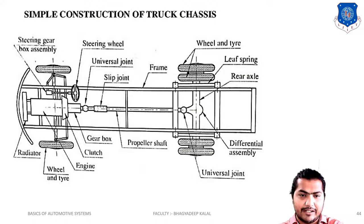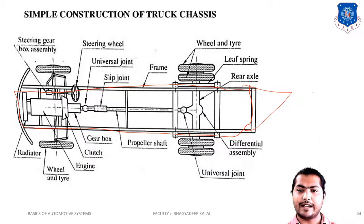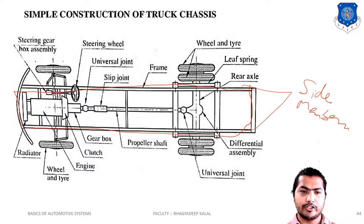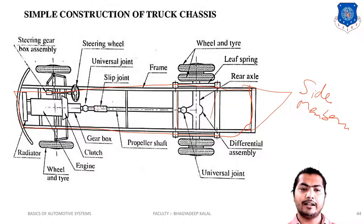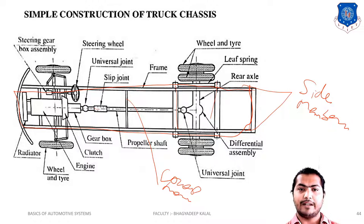Now let's look at the construction diagram of a truck chassis. The chassis has two main members called side members or longitudinal members. The crossed members — which support the engine, gearbox, propeller shaft, slip joints, etc. — are called cross members. The radiator and engine are fitted on this structure. Different types of chassis are made by different companies.